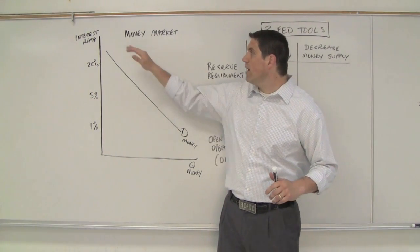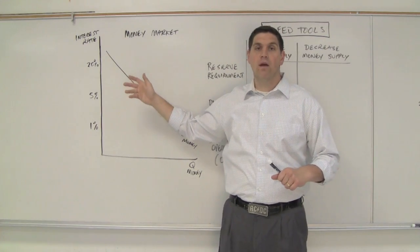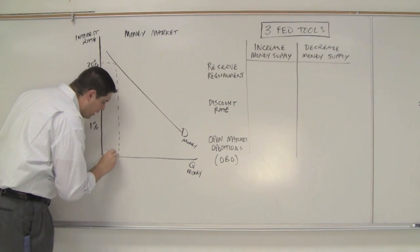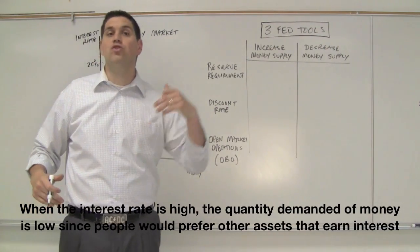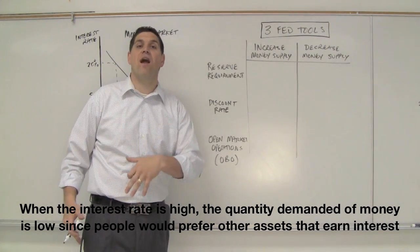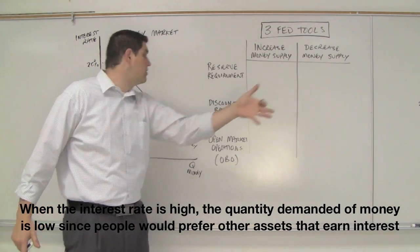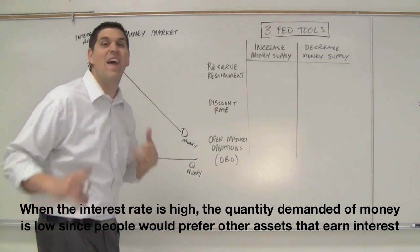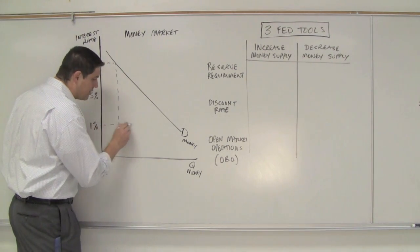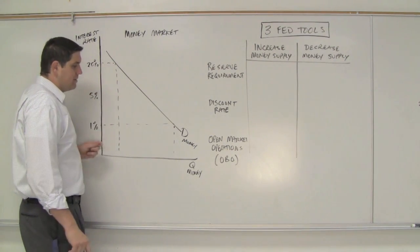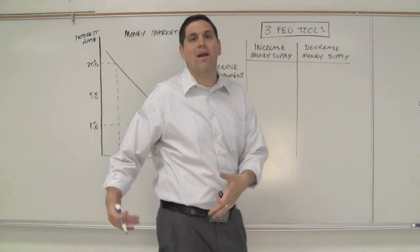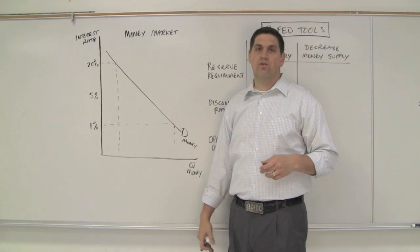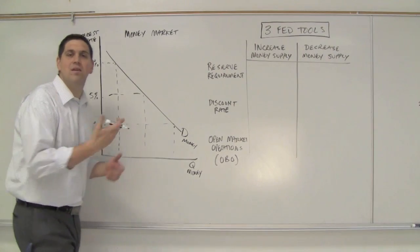Let's analyze the graph. The interest rate is on the vertical axis — that's the price of using money. If the interest rate is super high, the quantity demanded of money is going to be low. When the interest rate is high, you prefer having money in bonds earning you money. At a 20% interest rate, you'd rather have no cash and go buy some bonds. At a low interest rate like 1%, I'll keep money in my pocket — I'm not going to buy bonds because I'm not getting a very high return. This is the demand for money.